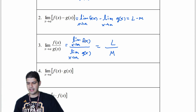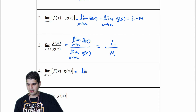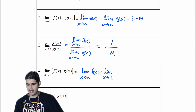We can do the same thing with multiplication. The limit as x approaches a of f of x times the limit as x approaches a of g of x gives us L times M.